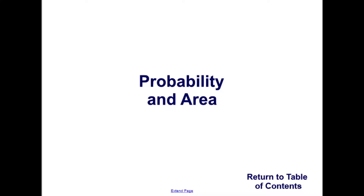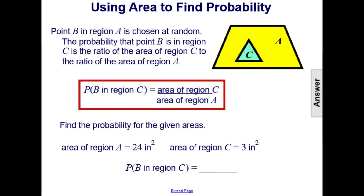Probability in area. Using area to find probability is similar to using length to find probability. Here we have a situation where point B in region A is chosen at random. The probability that point B is in region C is the ratio of the area of region C to the area of region A, as shown here.